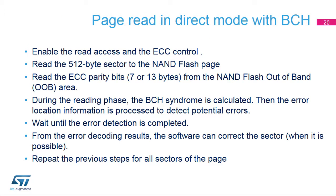To read a page in direct mode, enable the read access and the ECC control. Read the 512-byte sector from the NAND Flash page. Read the ECC parity bits — 7 or 13 bytes — from the NAND Flash out-of-band, or OOB, area. During the reading phase, the BCH syndrome is calculated. Then the error location information is processed to detect potential errors. Wait until the error detection is completed. From the error decoding results, the software can correct the sector when possible.